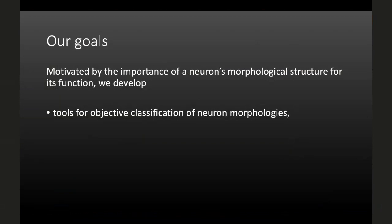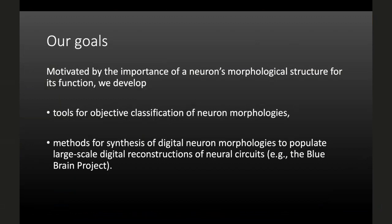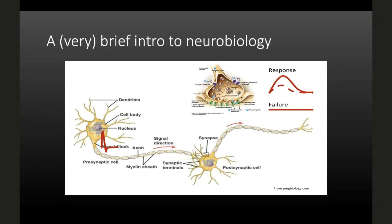Once we had tools for classifying neurons, the idea was to run the machine backwards — to use the classification tool to produce more synthetic digital neurons to populate digital models of parts of the brain, such as what's being done in the Blue Brain Project. If you want an accurate computer model of an actual network of neurons, you need a wide variety and a lot of diversity in the morphologies used to populate the network. Let me give a brief introduction to neurobiology to fix some language.